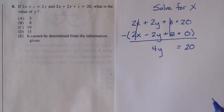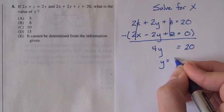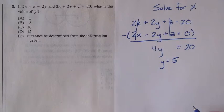So now we're left with 4y equals 20. You can divide both sides by 4 and get y equals 5. So the answer is A, 5.